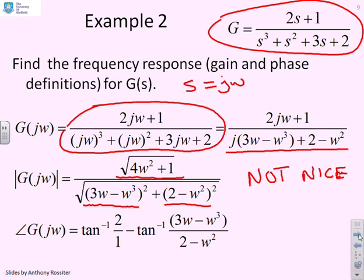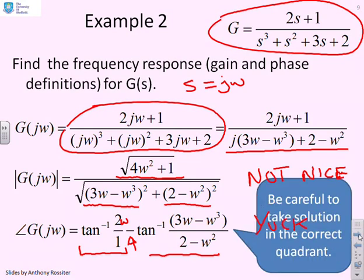The phase is not quite so bad but still not ideal. We have the phase of the numerator: tan⁻¹(2ω/1), and here's the formula for the denominator where notice I've put a minus sign because it's the denominator. Again, you might be saying yuck—yes, I can do it, but it doesn't look particularly nice. Please be careful with the phase to ensure you get your answer in the correct quadrant.